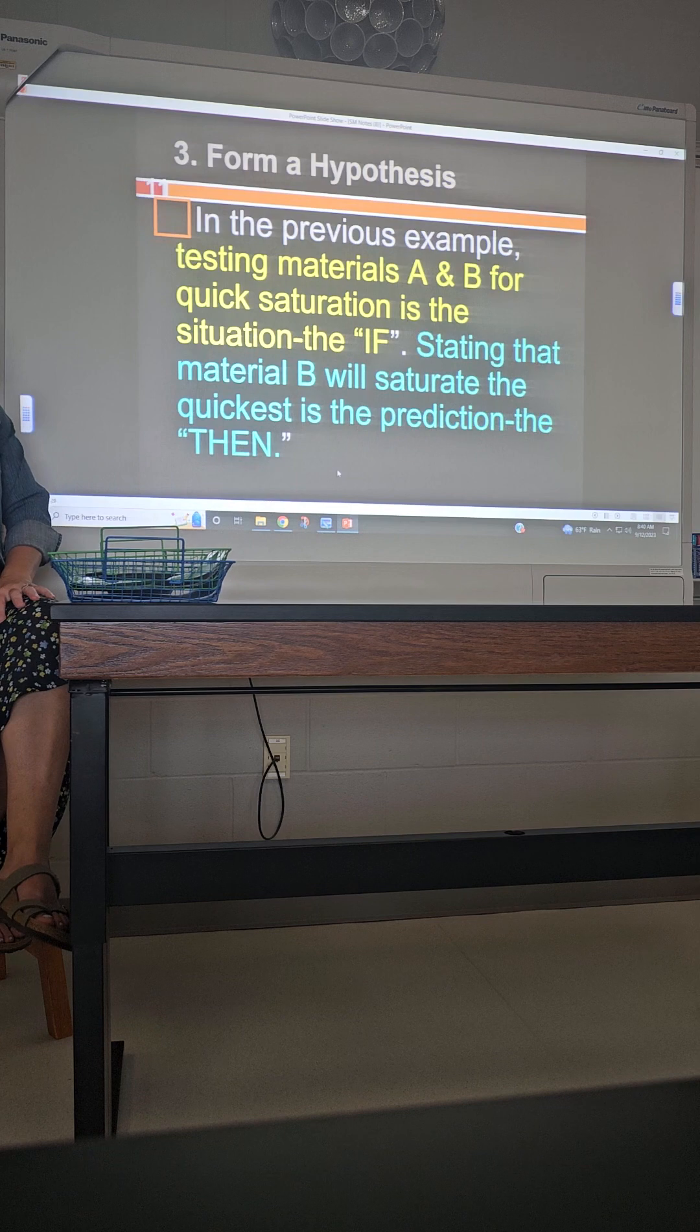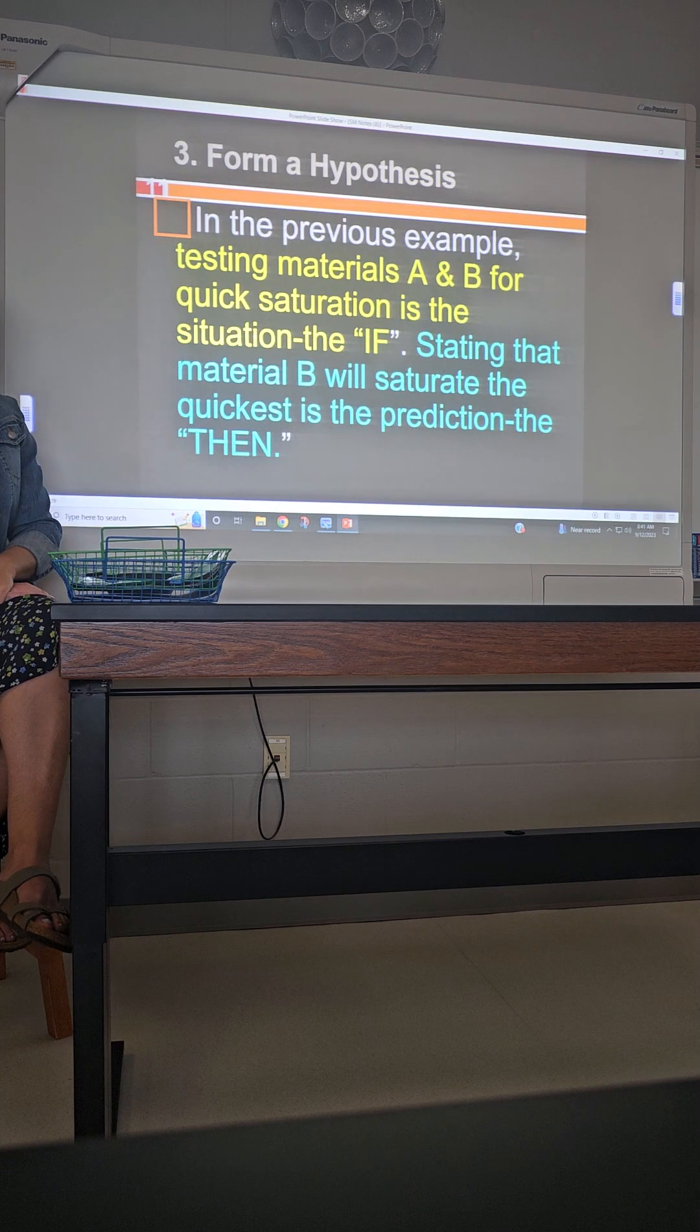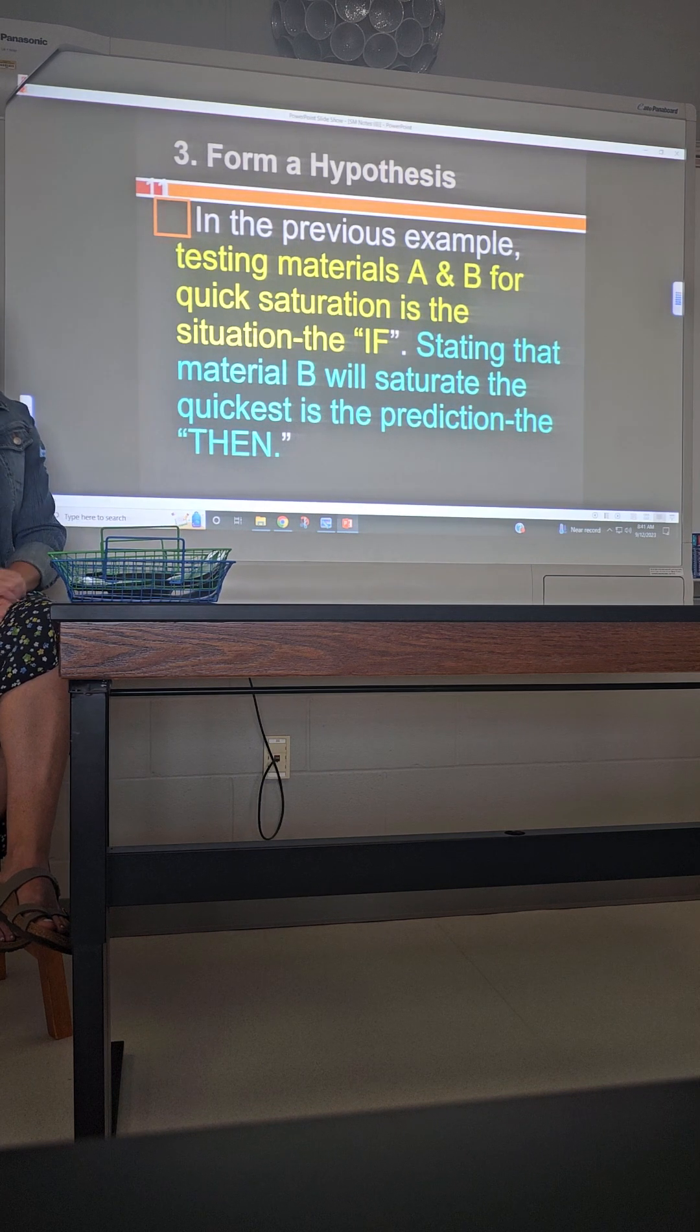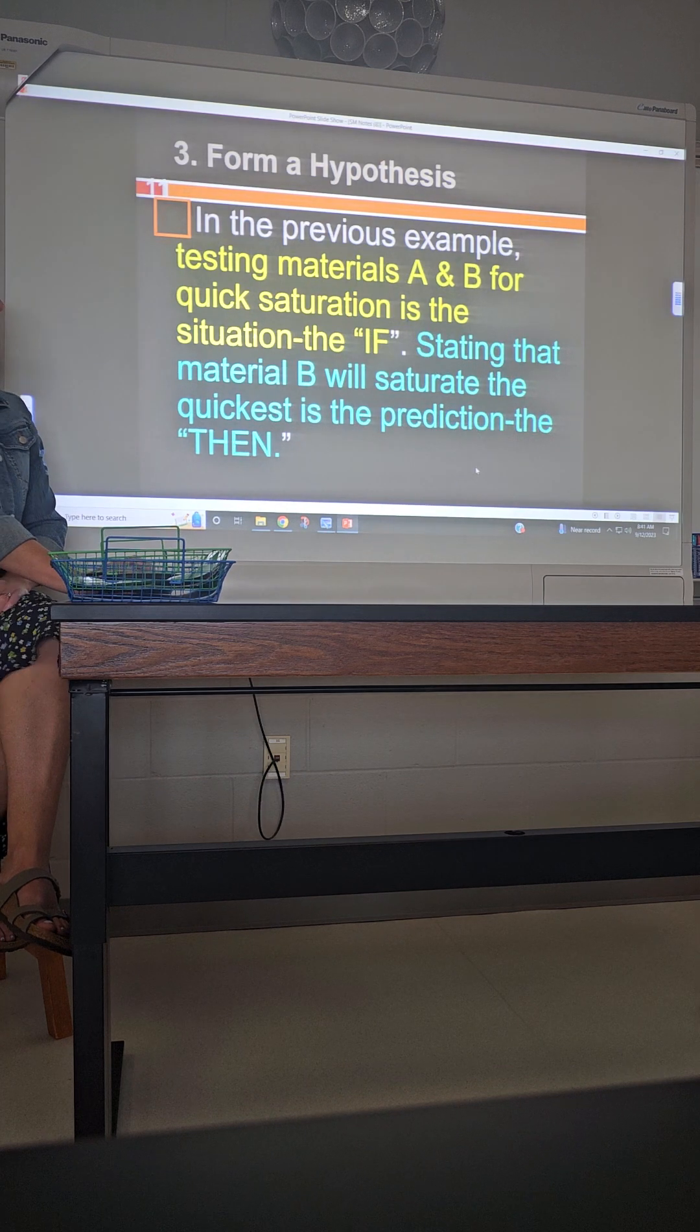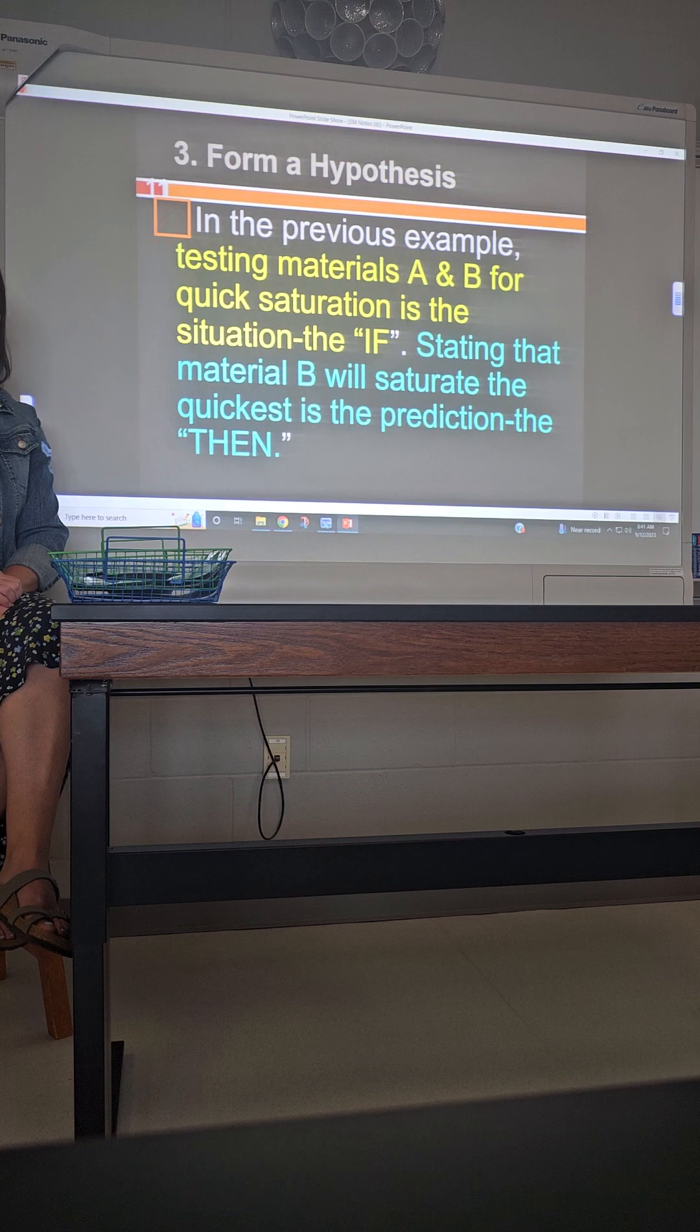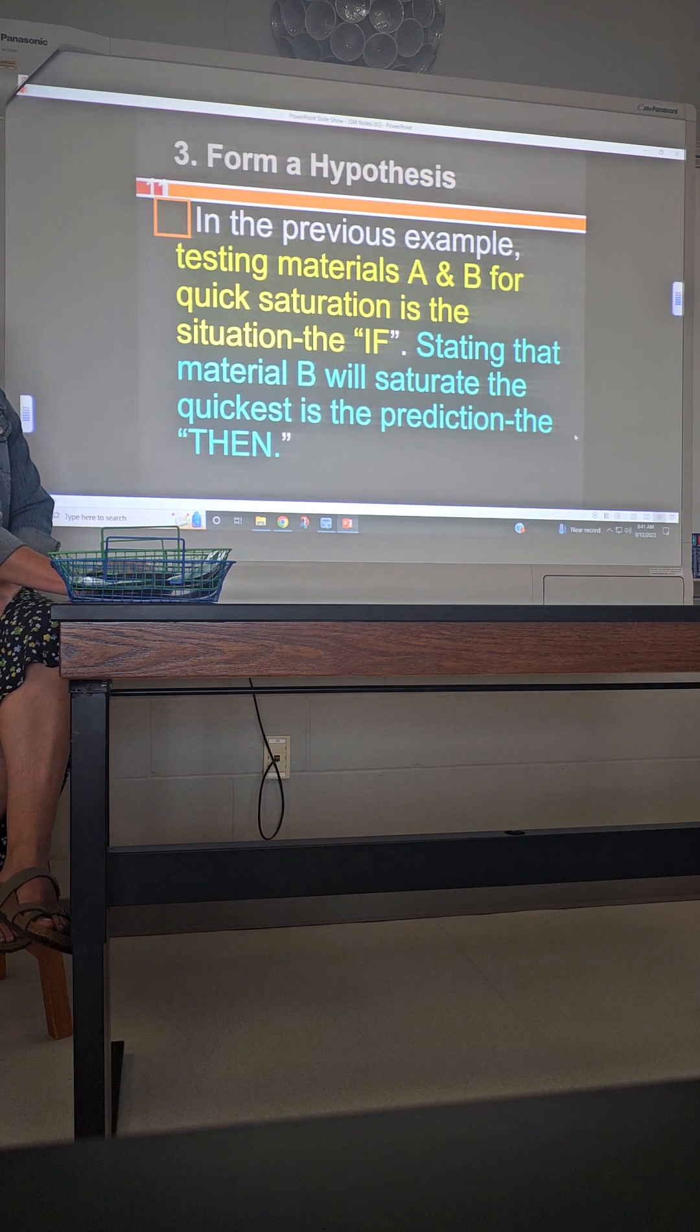All right. So in the previous example, testing materials A and B for quick saturation is the situation. That is the if. So everything in yellow is our if. Everything in this teal stating material B will saturate the quickest is the prediction. It is our then. So if you use that as kind of a formula, it's pretty easy. After if gives your situation, put your word then, and you make your prediction without using the words I think or I predict. Does that sound familiar? From last year. This is high level. Should be. Should have had the same. Anybody? Yes? No? Too long ago? Most eighth graders, usually somebody's like, yeah, that's not so familiar. Anything? Kind of. Kind of. Okay. All right.